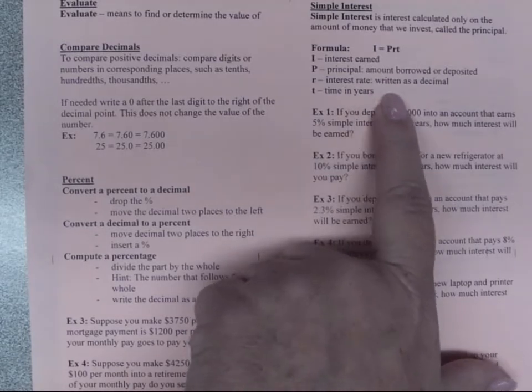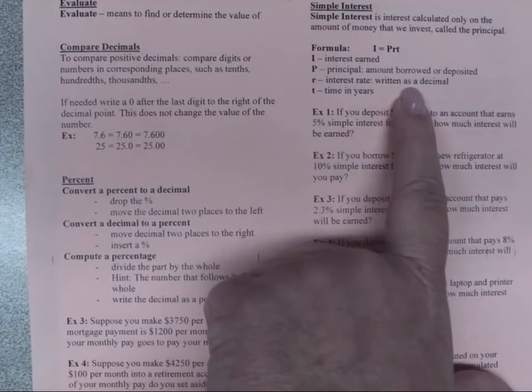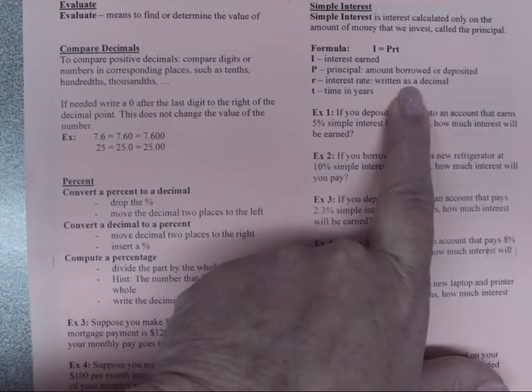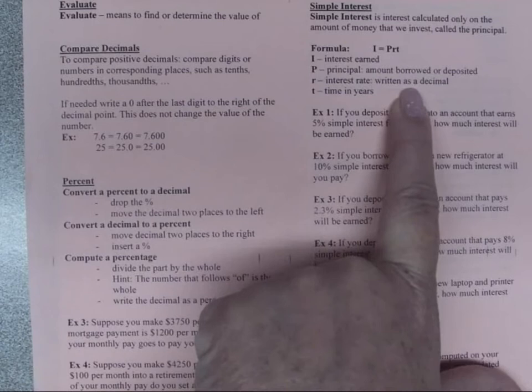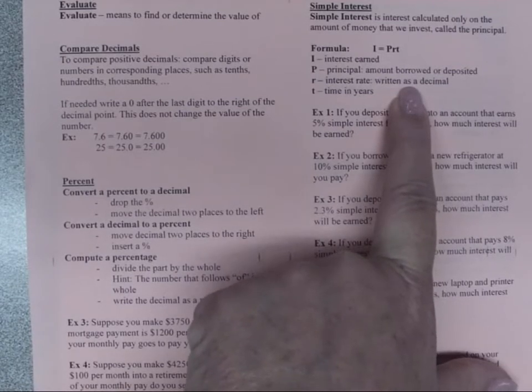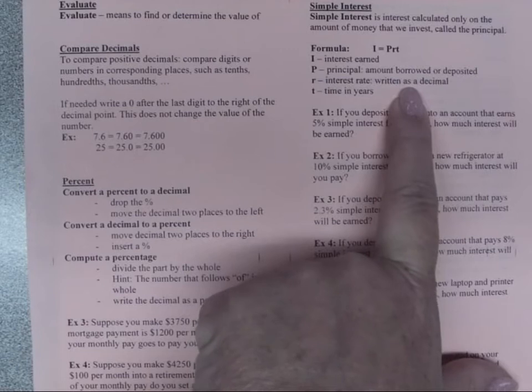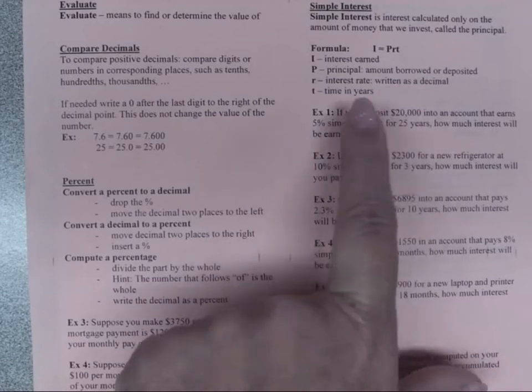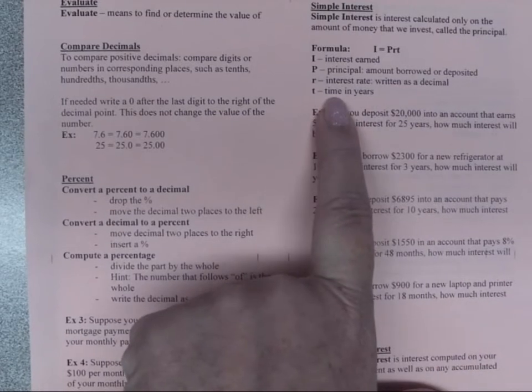The interest rate must be written as a decimal. And make sure you're careful about whether or not you need to put a zero in front of the number or not. Because if you change it from like 3% and you don't write 0.03, but you write 0.3, that's 30%, and that's way different. So be careful about how you write the decimal. And then T is always going to be in years.